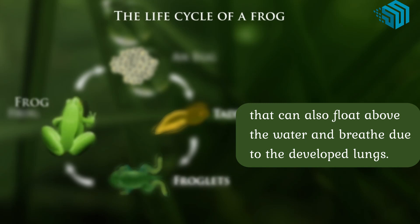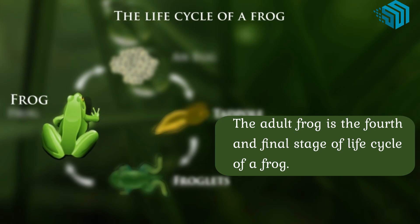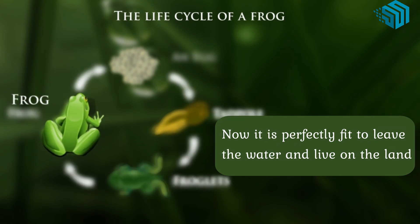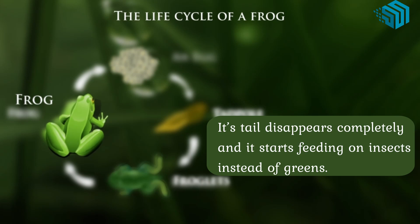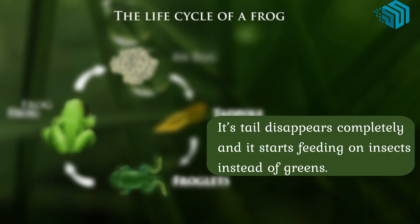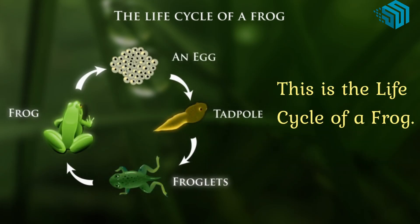The adult frog is the fourth and final stage of the life cycle of a frog. Now it is perfectly fit to leave the water and live on the land. Its tail disappears completely and it starts feeding on insects instead of greens. So, this is the life cycle of a frog.